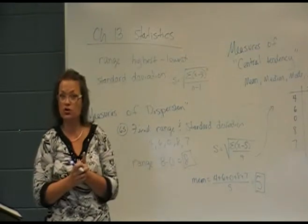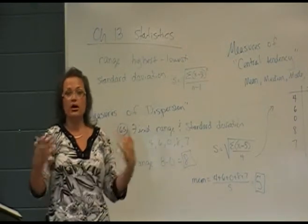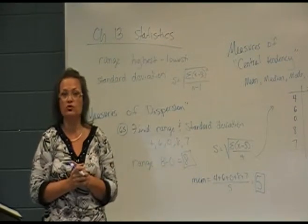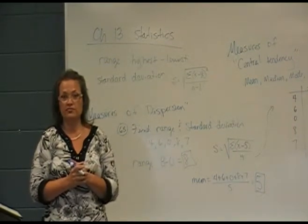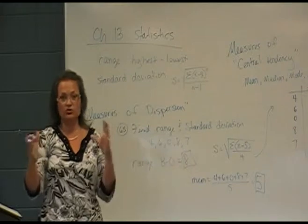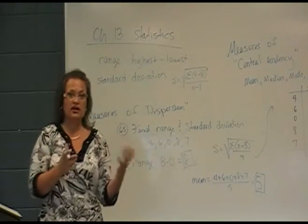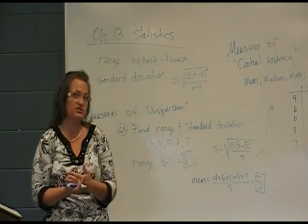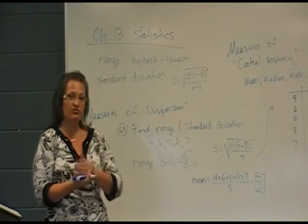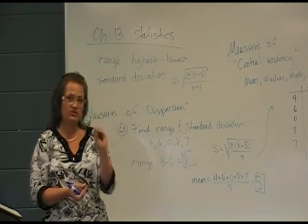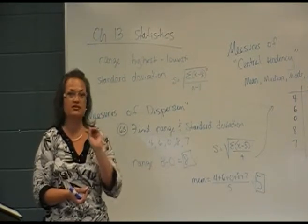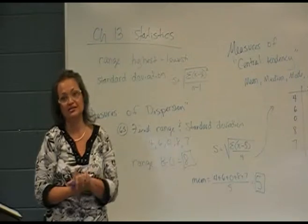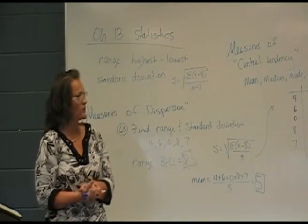Quality control is another example. If you were buying a box of cornflakes at Walmart or wherever, you would want to know the range or standard deviation in the weight of that box of cornflakes. The quality control person tries to make sure everyone is consistent — that there's a very small dispersion, that every box is almost exactly the same. So a small standard deviation is desirable in quality control.